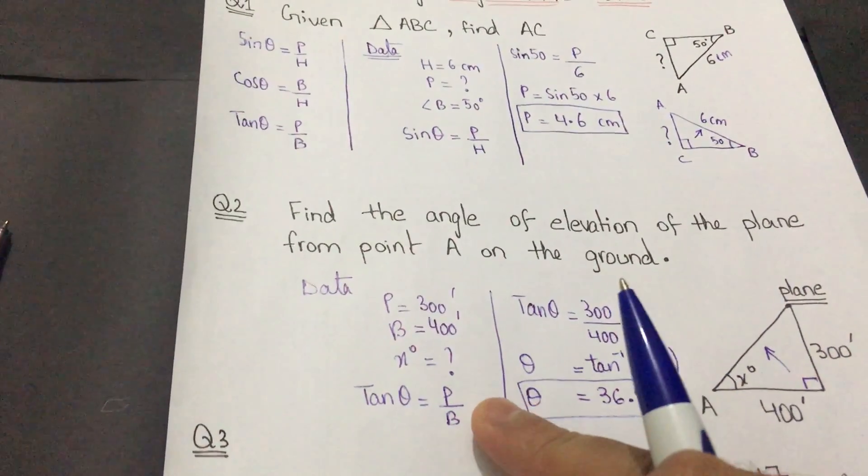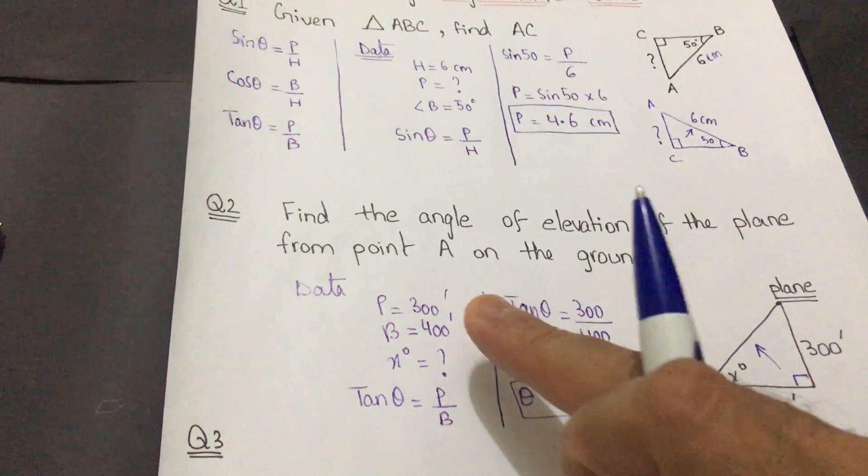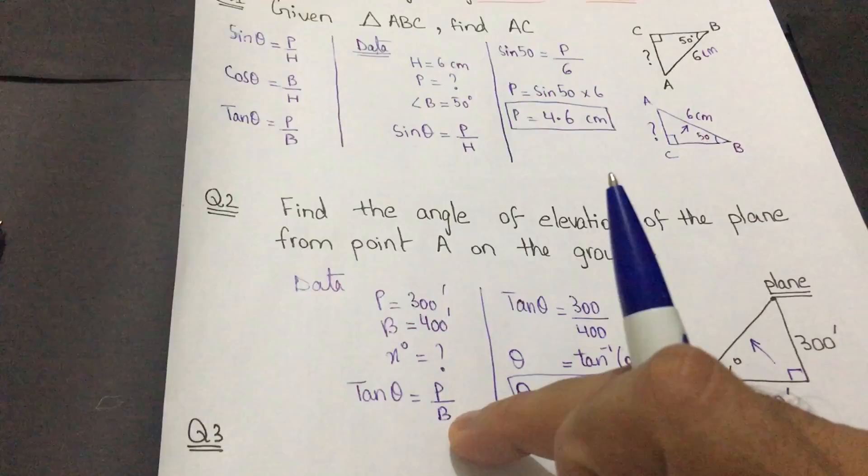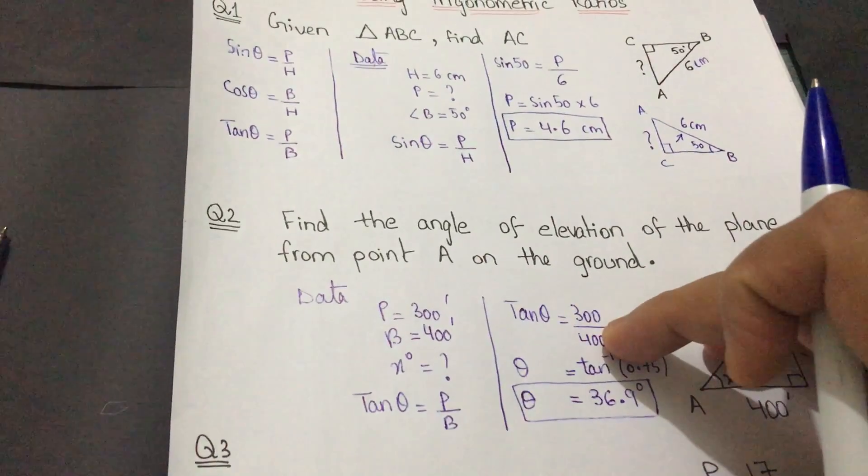So I wrote tan theta equals perpendicular upon base. Now I will just put the values: instead of P, I will write 300 feet, and the value of base is 400 feet. On dividing 300 divided by 400, I will get 0.75.